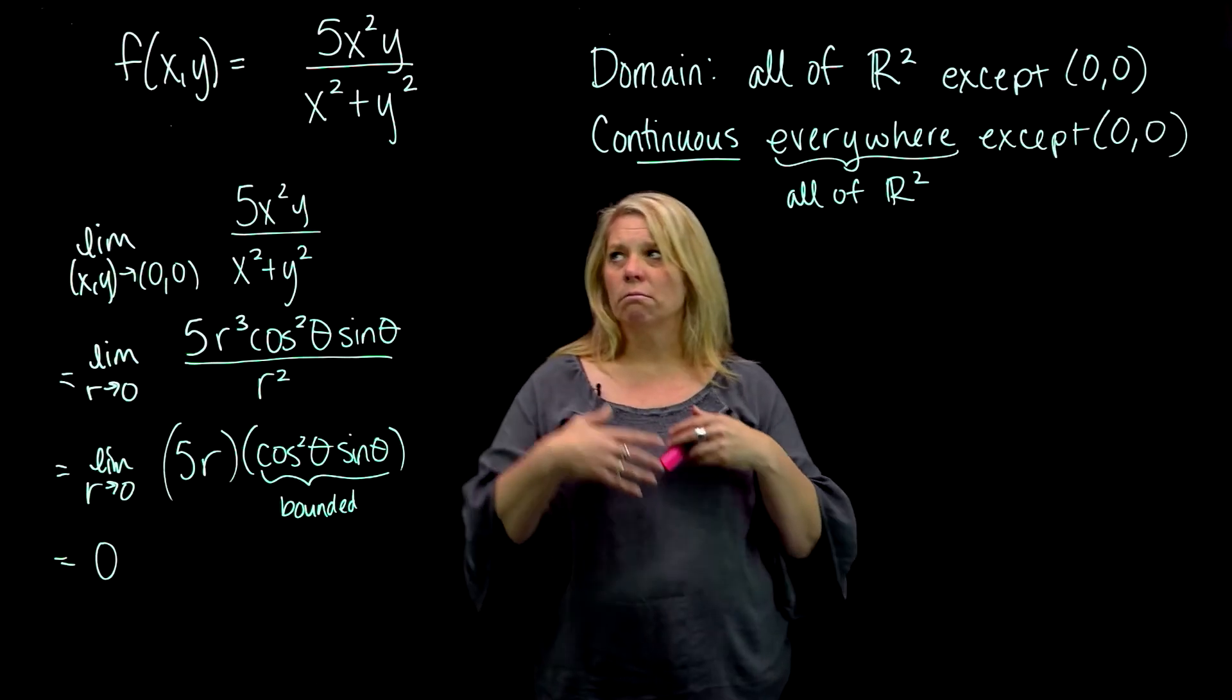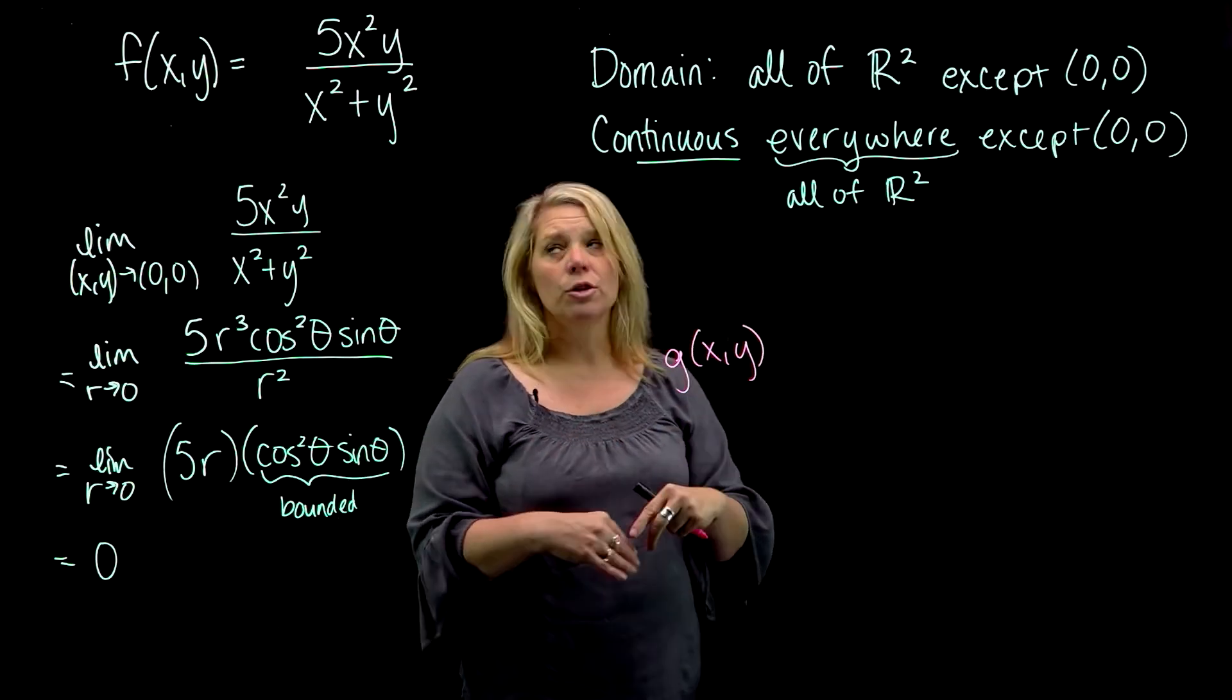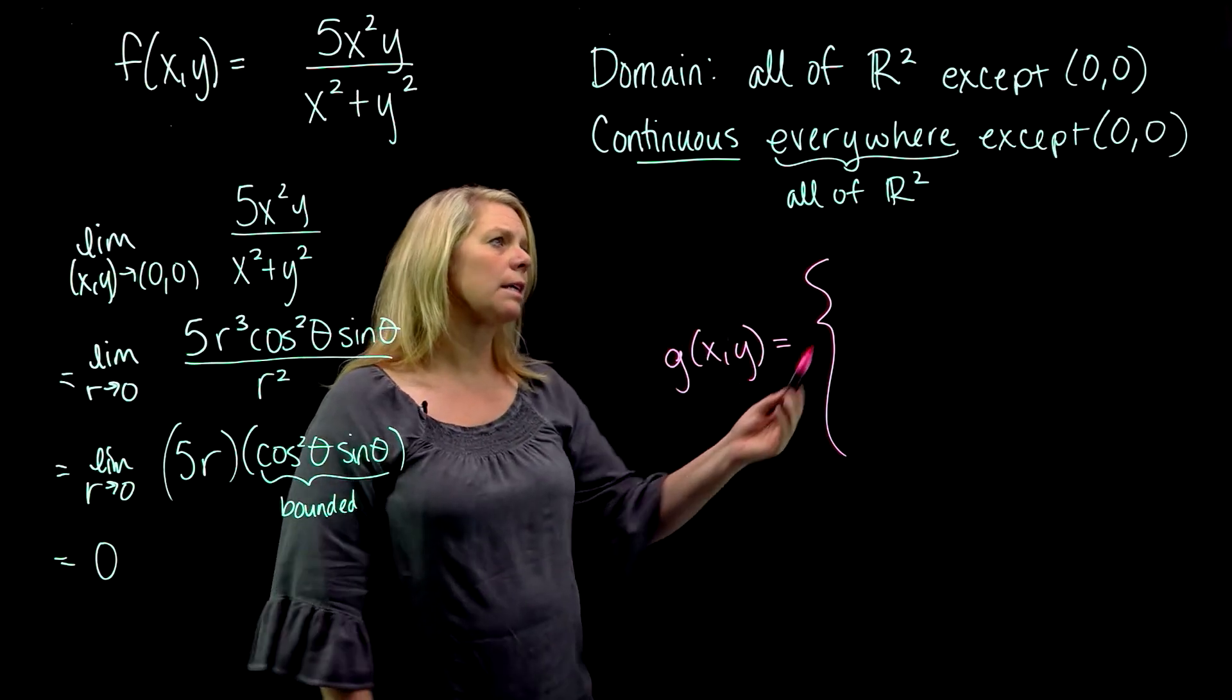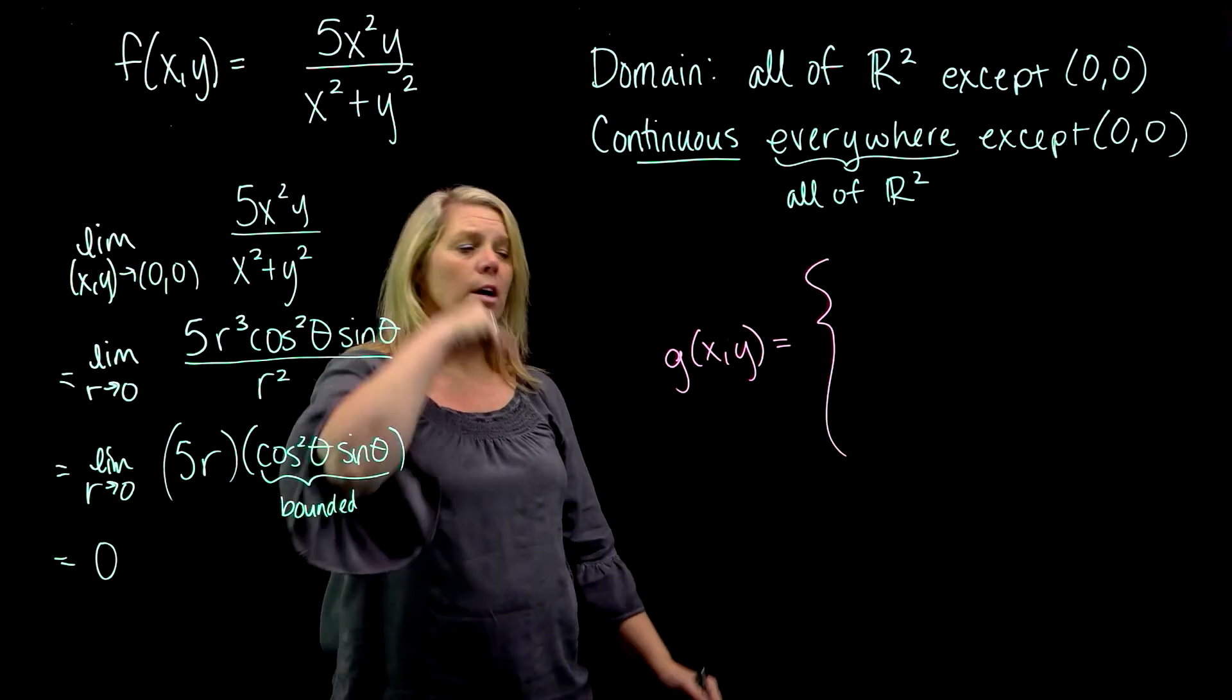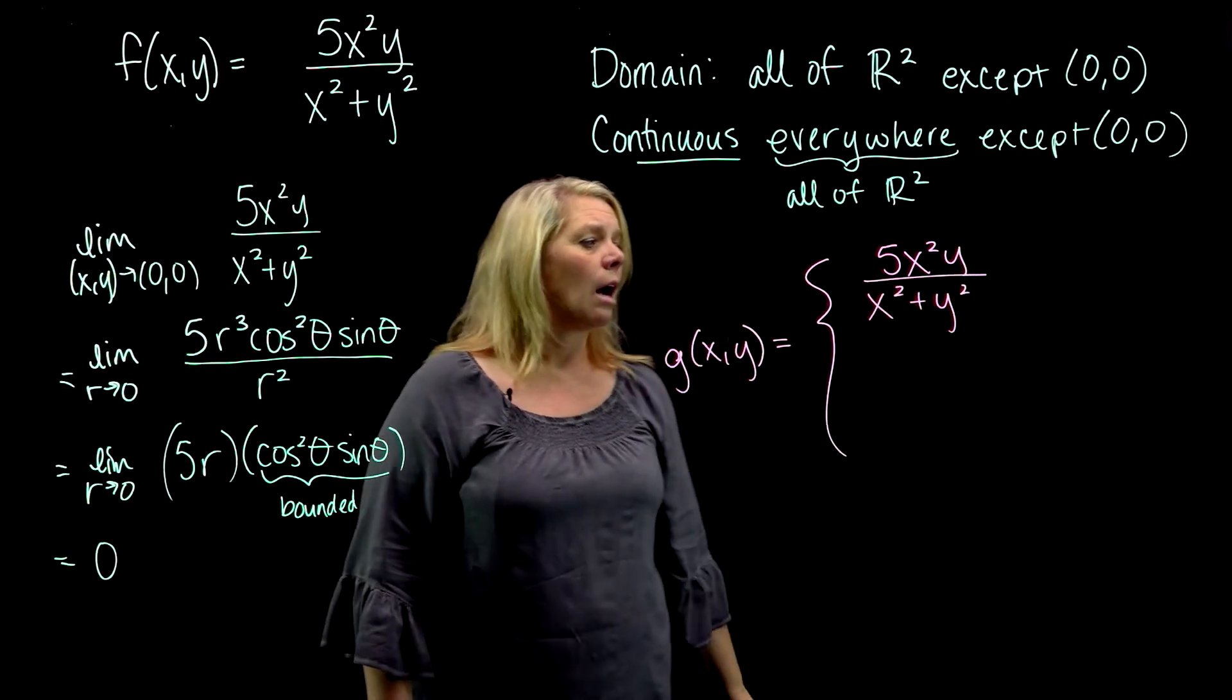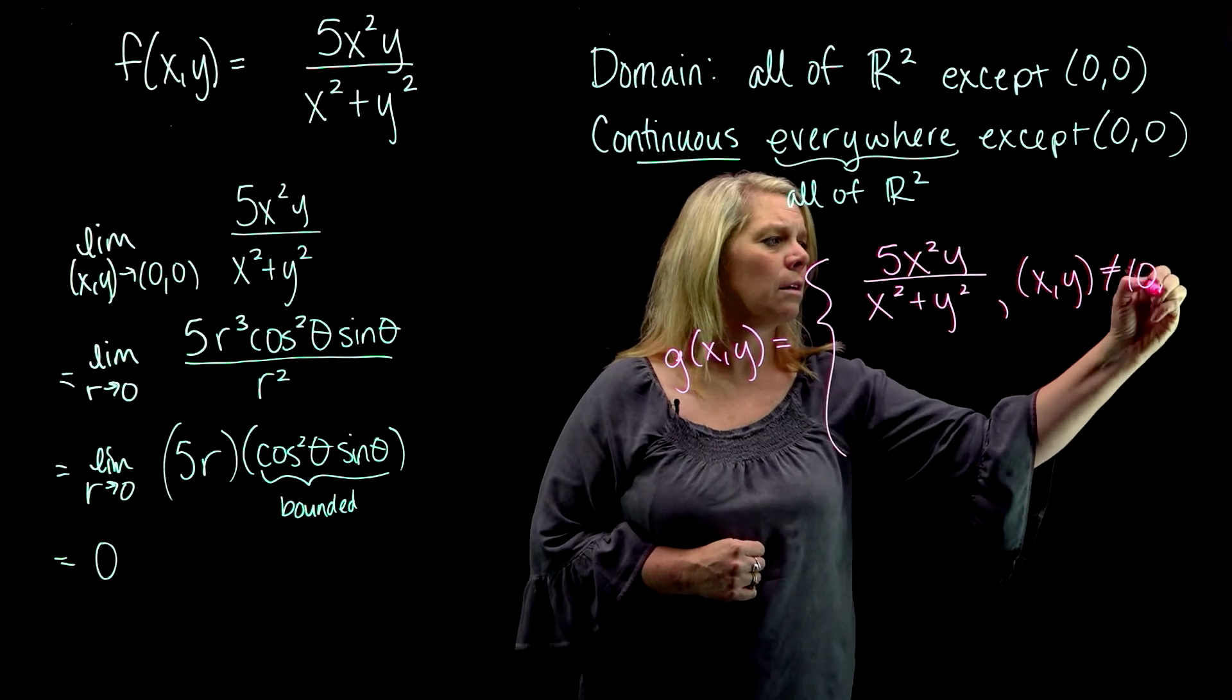Maybe I'll call it g(x,y), give it another name, where this new function is the same as the original function. I'm going to piecewise define this. Same as the original function everywhere except this place that's a problem in our domain here. So this function is going to be defined as 5x²y over (x² + y²) everywhere except the origin. So we could say when (x,y) is not (0,0).